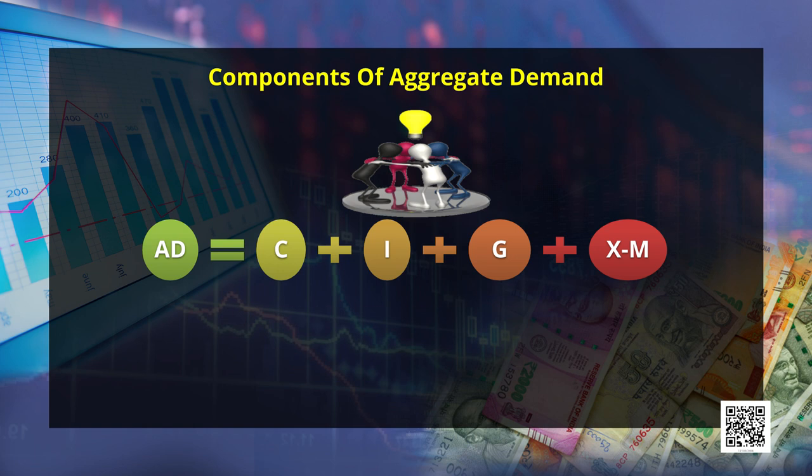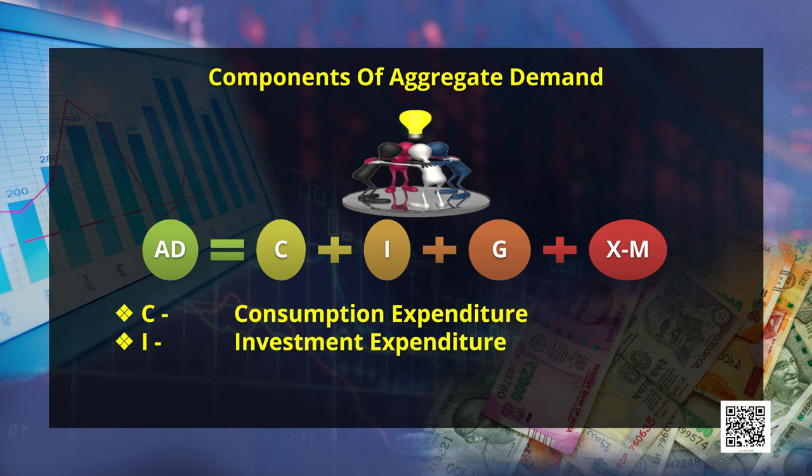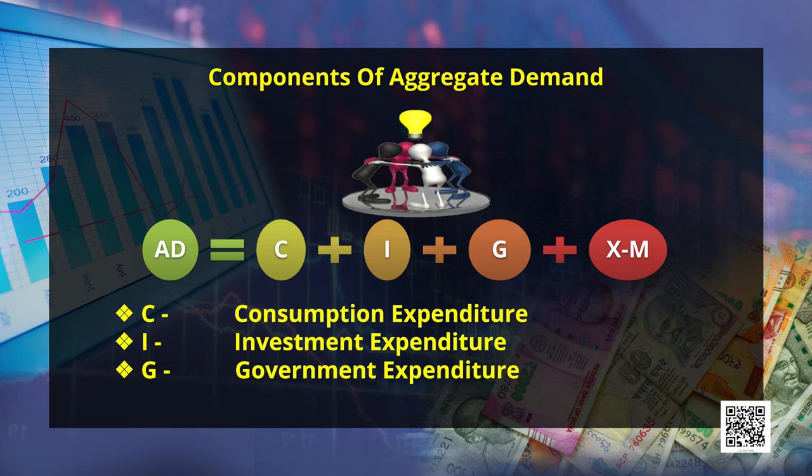Aggregate demand represents the total demand for all goods and services in the economy in a year. This is actually a planned demand — whatever consumers are planning to demand in the coming year. Aggregate demand is divided into components: the first and most prominent being consumption, which refers to the total consumption expenditure by households planned for the year. The next component is investment — the total investment expenditure planned by firms. Together, consumption and investment constitute the two-sector model. Adding government expenditure gives the three-sector model, and including net exports gives the four-sector model. According to your curriculum, we'll be studying the two-sector model.